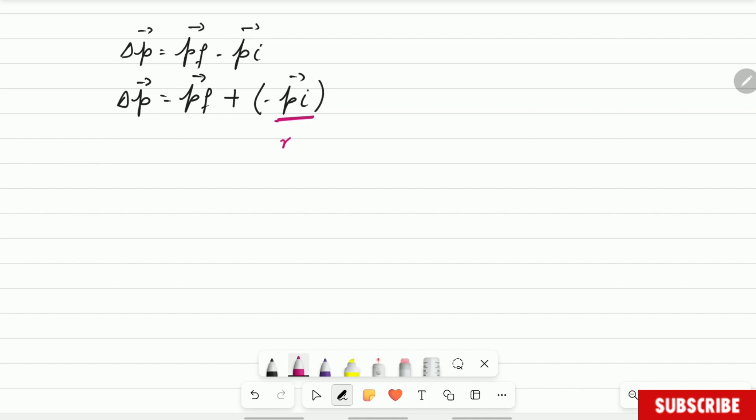This is a negative vector. That is a negative vector. As you can see there is minus initial momentum. Now what is a negative vector? A negative vector is a vector in opposite direction. That is a negative vector. It's a vector that is pointing in the opposite direction to the one you said is positive.